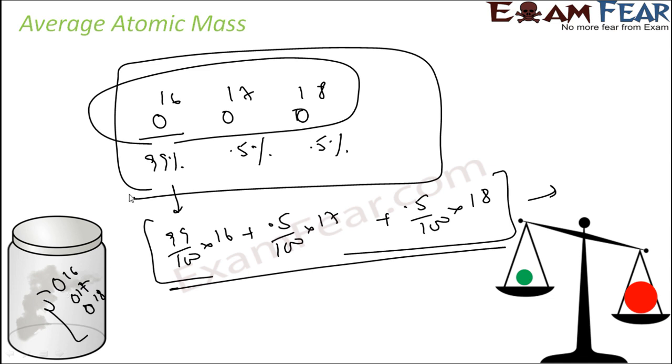We take the average based on proportion. We know oxygen-16 is 99%, oxygen-17 is almost 0.5%, oxygen-18 is almost 0.5%. So we take the average and get some value, mostly 16 point something. That is the average atomic mass for oxygen. Similarly, for all elements you can find the average atomic mass.